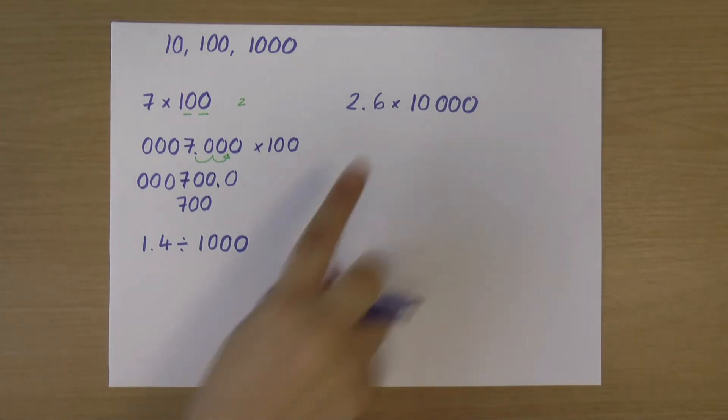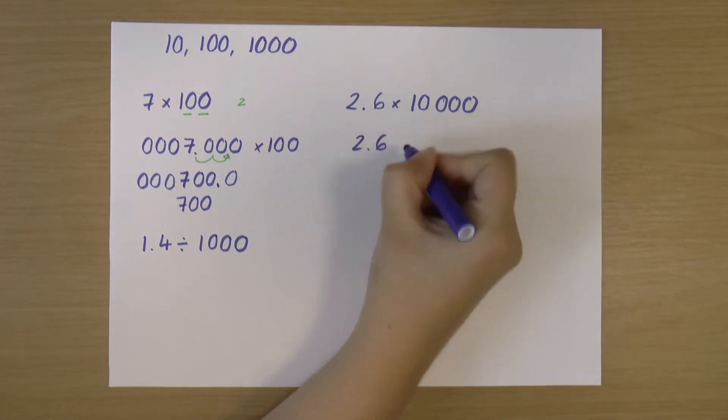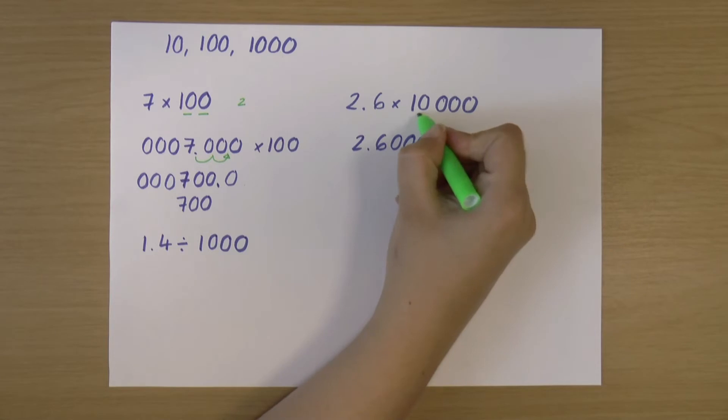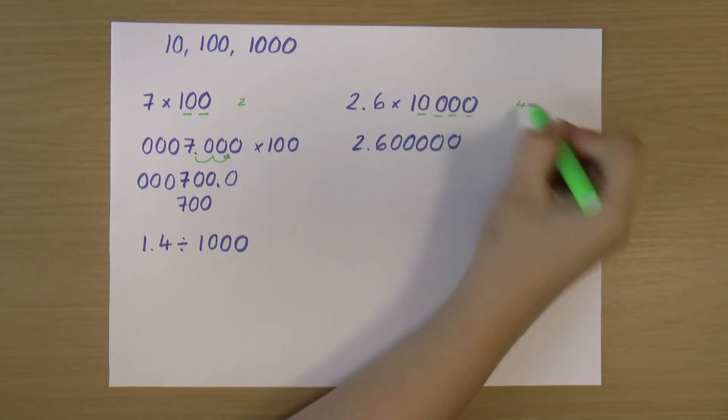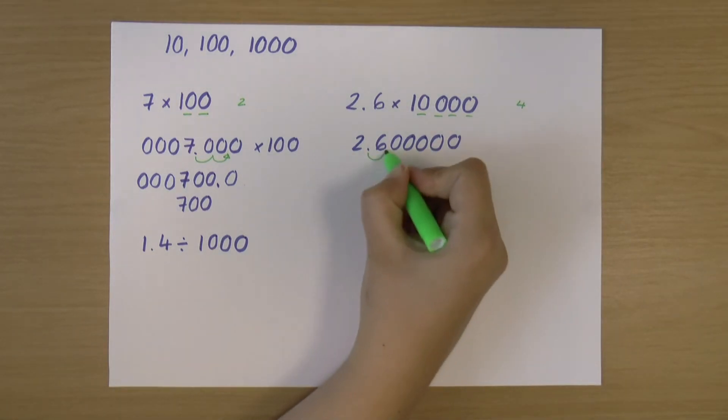Okay, let's have a look at this one over here. So 2.6 times 10,000. Again, I'm just going to add some 0s to this to make it easy to do. And I'm going to count my 0s in 10,000. So I've got 1, 2, 3, 4. Four 0s in 10,000. And that means I'll move my decimal point to the right four places. So 1, 2, 3, 4.